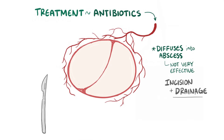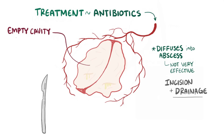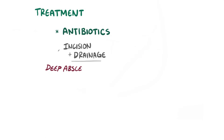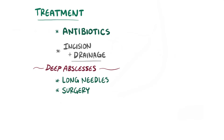Oftentimes there can be a large empty cavity that remains afterwards, and this can easily get reinfected. To prevent that, large abscesses are drained and often packed with gauze to fill the space, until that tissue heals naturally on its own over time. Deeper abscesses sometimes have to be drained with long needles or surgery, depending on the location. Finally, antibiotics are sometimes used even after the drainage to make sure there are no additional bacteria lingering around.